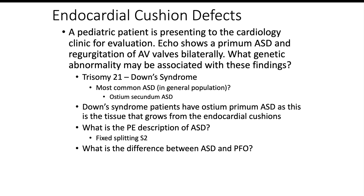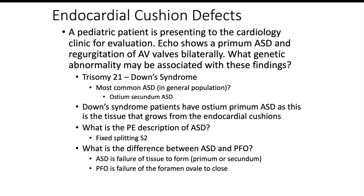What is the difference between an ASD and a PFO? Those are just two holes at the top of the heart, but if we dig a little bit deeper: ASD is a failure of tissue to form. Ostium primum ASDs, for example — it's the primum tissue that has failed to form embryologically, which is what we say in Down syndrome patients. Whereas PFO is actually a failure of the foramen ovale to close, because the foramen ovale closes embryologically due to fusion of two septal tissues. So ASD is failure of tissue to form, whereas PFO is a failure of fusion or the foramen ovale to close.